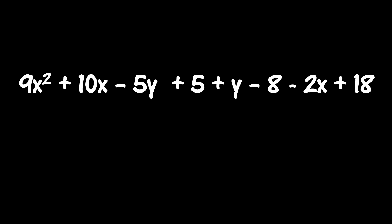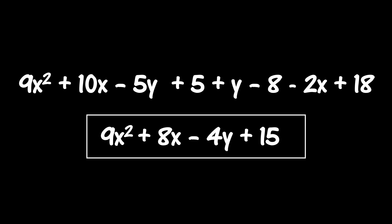Now, without any further ado, let's reveal the final simplified expression. The final simplified expression is 9x squared plus 8x minus 4y plus 15.